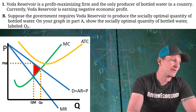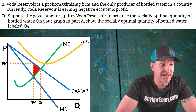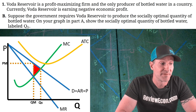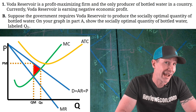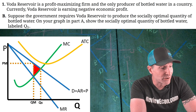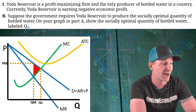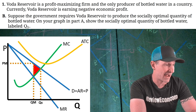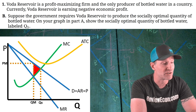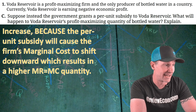For part C, suppose the government grants a per unit subsidy to Voda Reservoir. What happens to their profit-maximizing quantity of bottled water? My answer: increase, because the per unit subsidy will cause the firm's marginal cost to shift downward, and that results in a higher MR equals MC quantity. I think you'll need to reference that marginal cost shifting in order to get the point, along with saying increase.